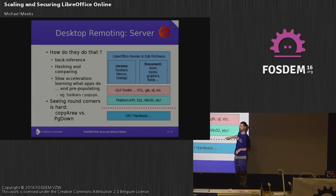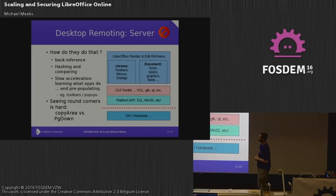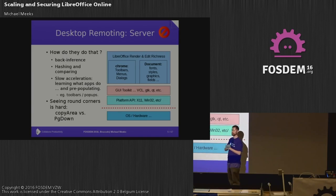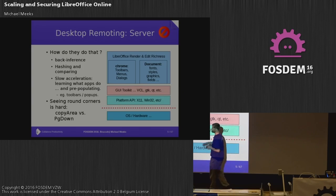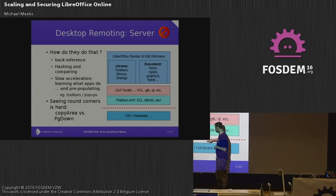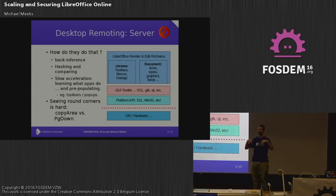Trying to work out exactly what changed can take quite a while and is not terribly efficient. It also needs to learn about the application to some degree — for example, NX caches menus so when your menu pops up, it knows what was there last time. But this takes time and needs to be pre-populated. Seeing around corners is hard. One area that's particularly hard is when you do a page down — you suddenly get a big chunk of new content, and it just can't be seen at this level, so you get a big hole that slowly fills with content.